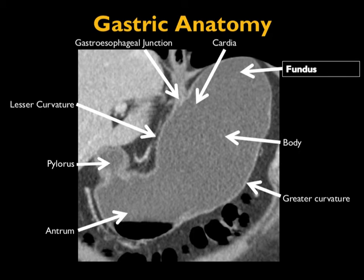Just a couple of comments about anatomy. Classic things we always think about: fundus, body, greater curvature, and lesser curvature. It's always interesting that you have to think for a second what's the greater curvature and what's the lesser curvature when looking at axial imaging. On coronal views it's obviously more apparent, and you can also see the pylorus on those images.